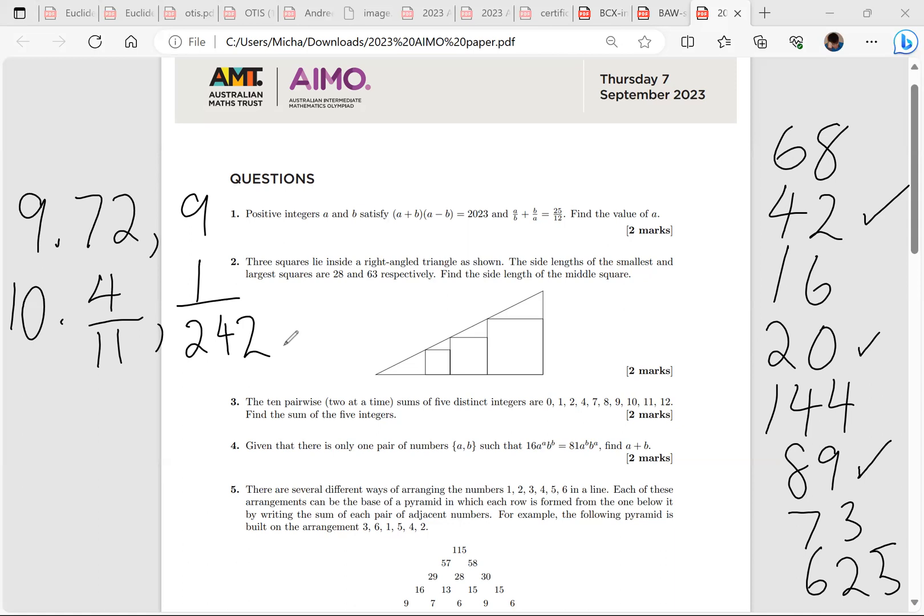You get one mark for each answer, but you would lose one mark for every random step that you don't explain or not even include. So I'd like to talk about question 10 today at some point.